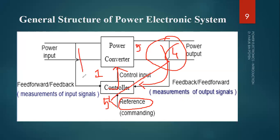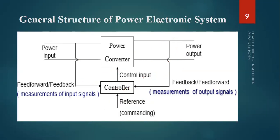There is another input applied at this converter — the feed-forward or feedback measurement of the input signal. The input is not constant; it will always be changing and varying. So whenever input is applied to the controller, it takes into consideration that for this input you are getting 4 but the reference is 5, and it uses some control input to the converter to make them equal. This is how the general structure of the power electronic system works.